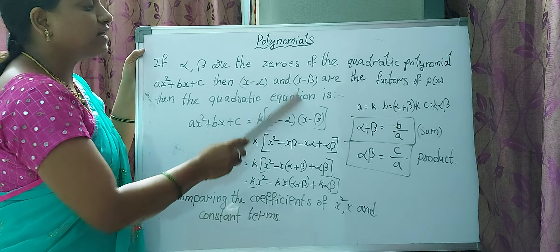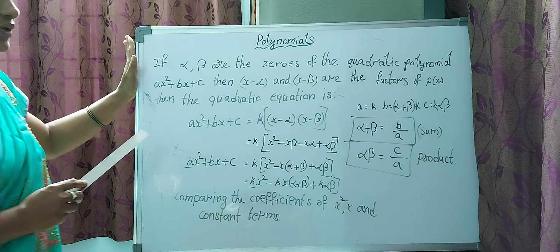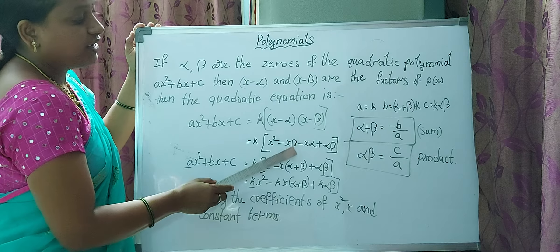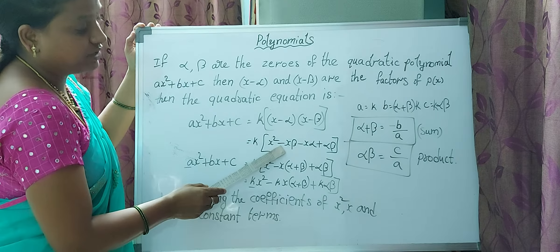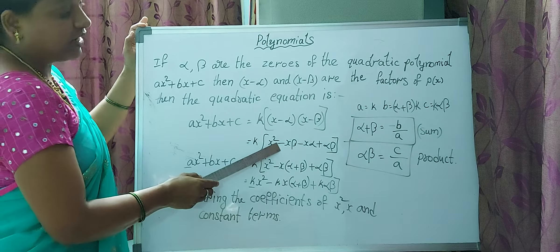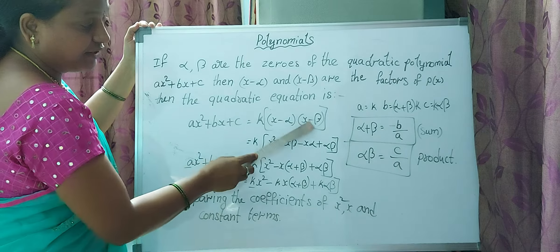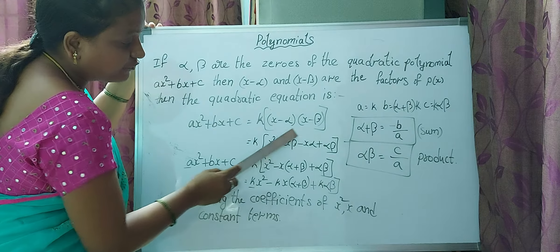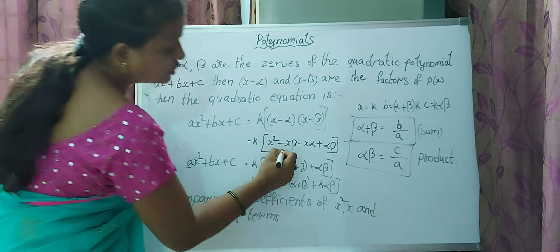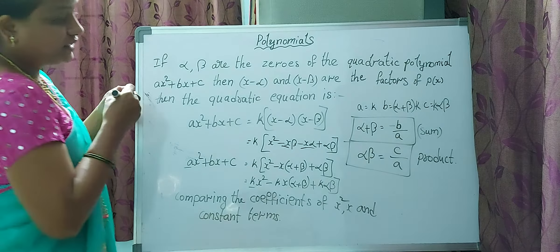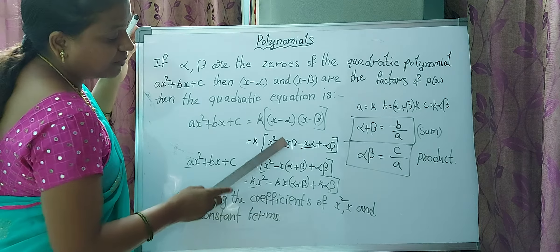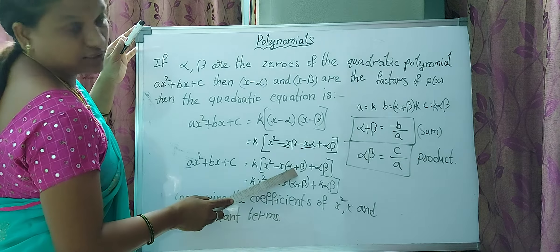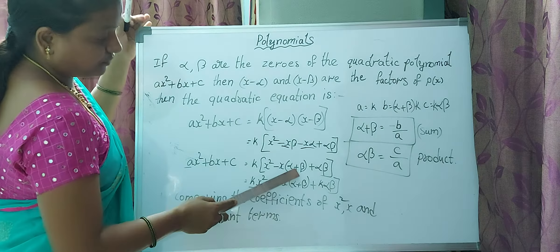Let us multiply these two factors: x times x gives x², x times (-beta) gives -x·beta, (-alpha) times x gives -x·alpha, and (-alpha) times (-beta) gives +alpha·beta. Taking x as common from the middle two terms, the middle term becomes -(alpha + beta)x.